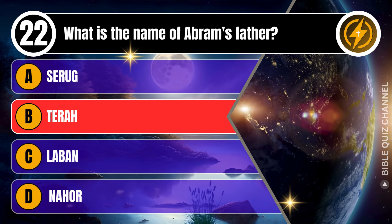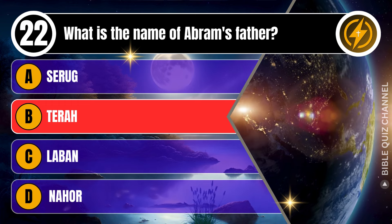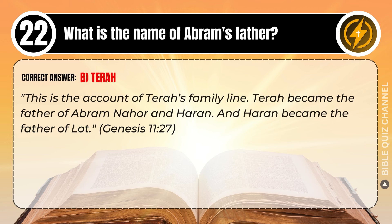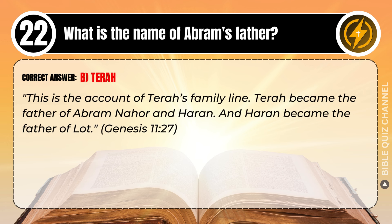Correct answer: B. Terah. Explaining the Bible — This is the account of Terah's family line. Terah became the father of Abram, Nahor, and Haran, and Haran became the father of Lot. Genesis, chapter 11, verse 27.